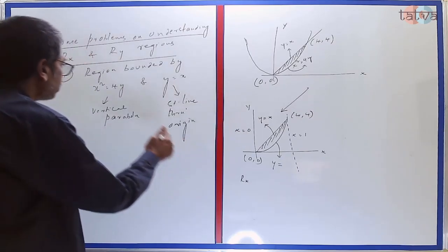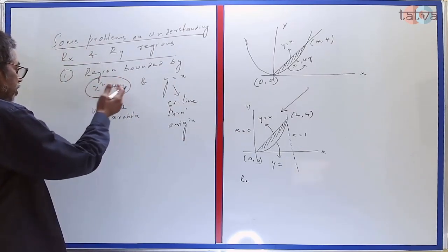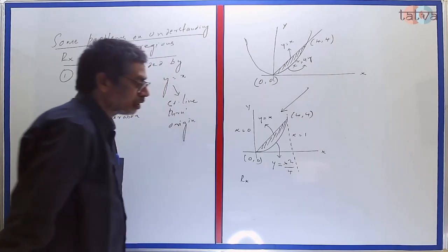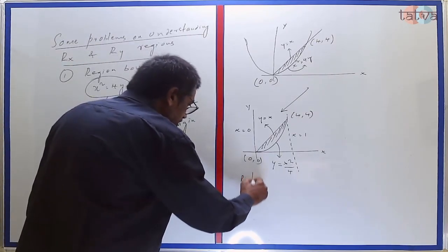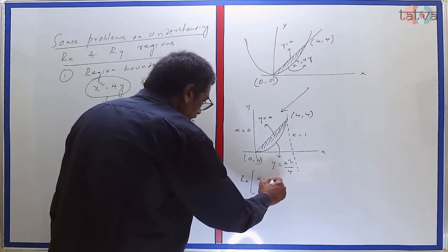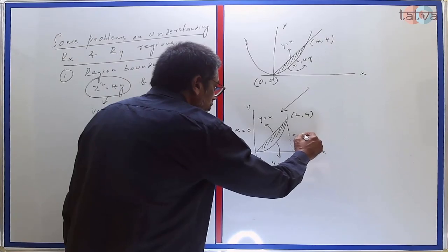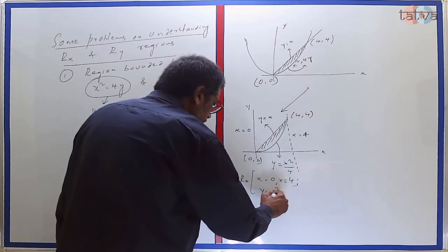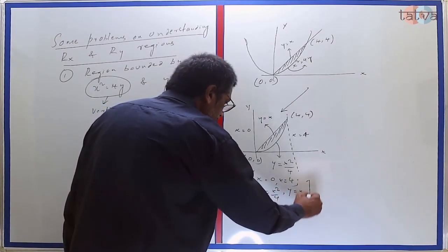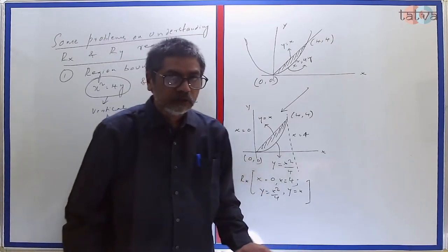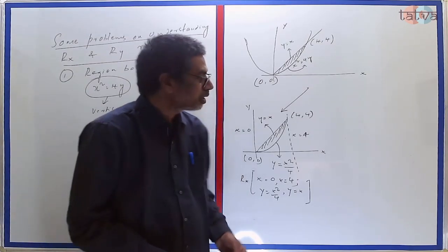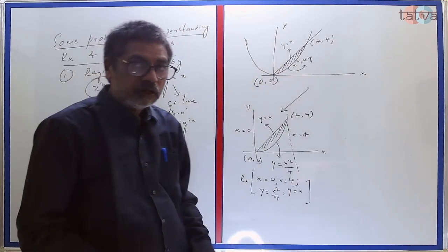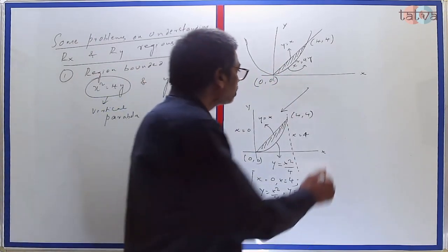So this Rx region can be put in notation. x = 0 to x = 4; y = x²/4 to y = x. And it is in the same order you fix the limits of the integration before you begin to evaluate. But is this the only way to express this region? Can I not try and trap it between horizontal lines? Let us see.